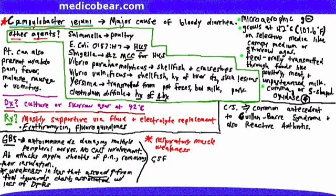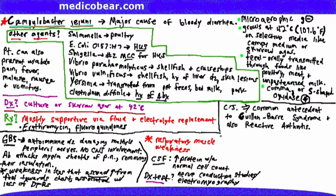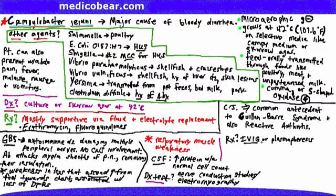Cerebrospinal fluid will show increased protein with a normal cell count. The most specific diagnostic test is nerve conduction studies/electromyography. Treatment is either IV immunoglobulin or plasmapheresis — both are equal in efficacy and should not be used at the same time.